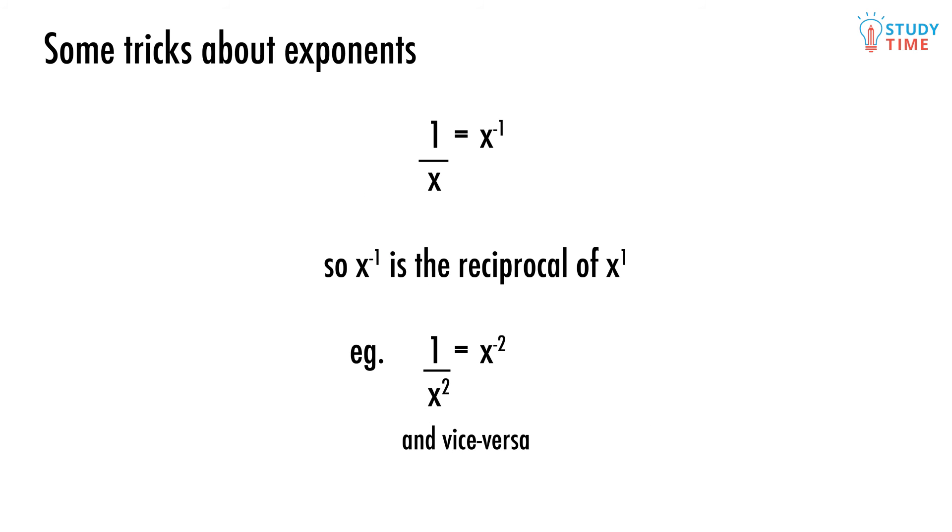Also, 1 over x is the same as x to the power of negative 1. The negative here means it's the reciprocal of x to the power of 1. This might make more sense this way: x to the power of negative 2 equals 1 over x to the power of 2, and vice versa.